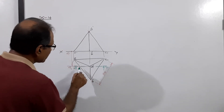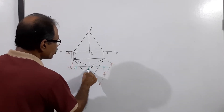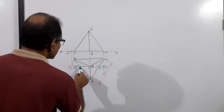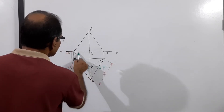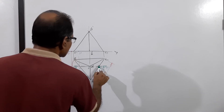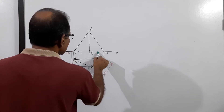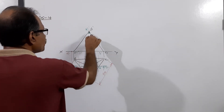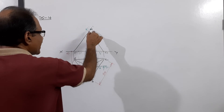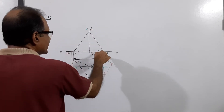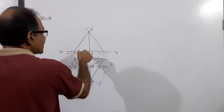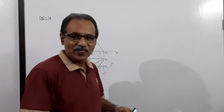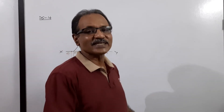The cutting plane cuts AB at point 1, passes through D at point 2, and cuts BC at point 3. Projecting these: 1 gives 1 dash, 3 gives 3 dash, and D gives 2 dash. Joining 1 dash, 2 dash, and 3 dash gives you the sectional elevation.